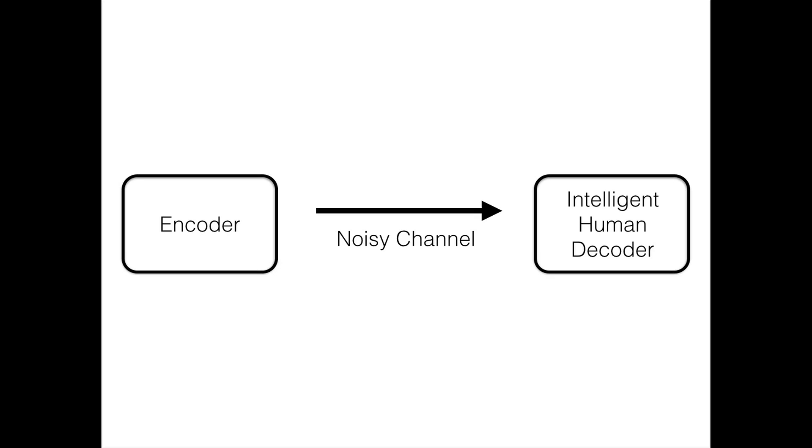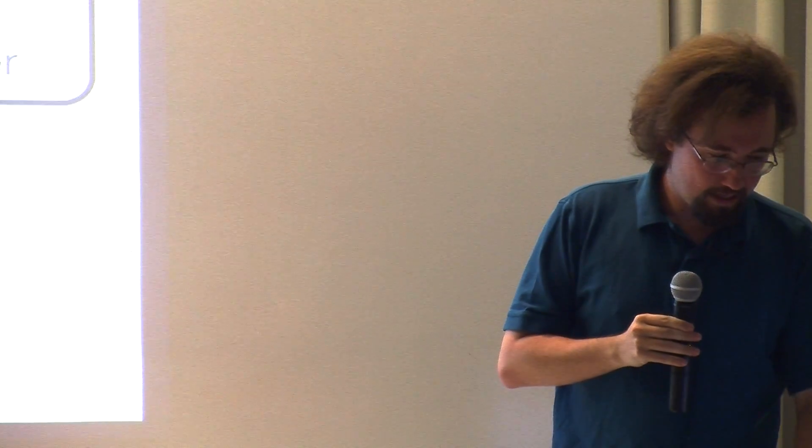To summarize: we've explored the idea that language is an efficient, robust code for talking to humans — rather than for talking to a system that mechanistically interprets things according to rules. When you consider language as a code for agents with human-like properties — general intelligence and memory limitations — language comes out as a fairly efficient and robust code.